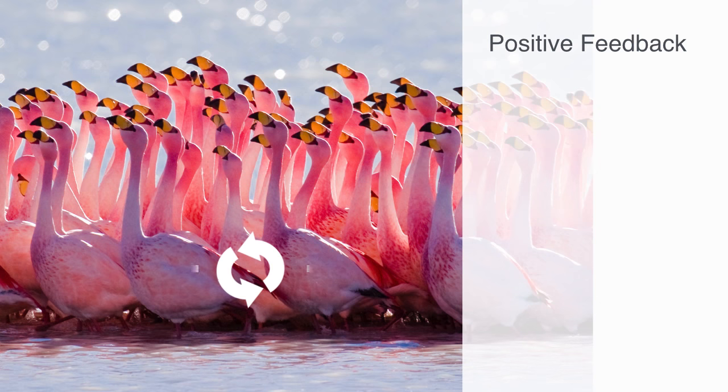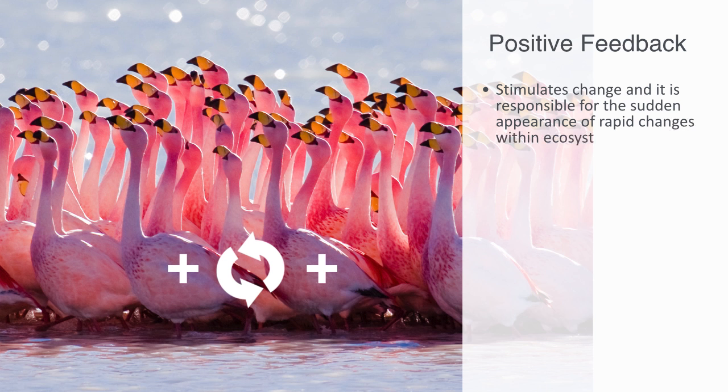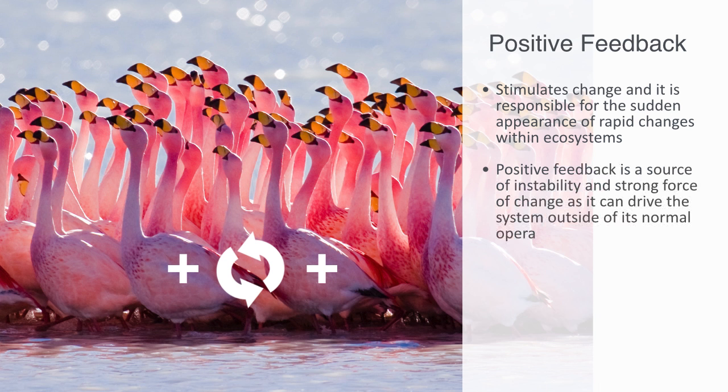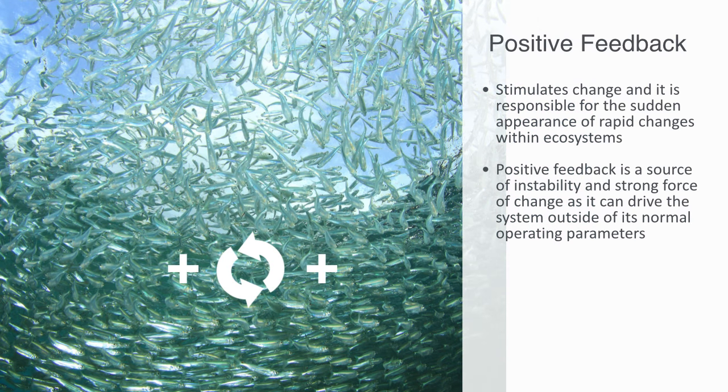Positive feedback stimulates change and is responsible for the sudden appearance of rapid changes within ecosystems. Positive feedback is a circular link of effects that are self-reinforcing. When part of the system increases, another part of the system also changes in a way that makes the first part increase even more. Positive feedback is a source of instability and a strong force of change, as it can drive the system outside of its normal operating parameters.